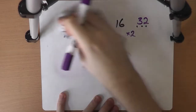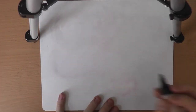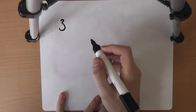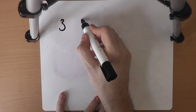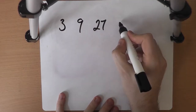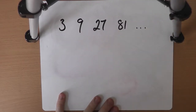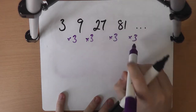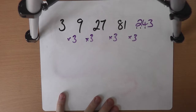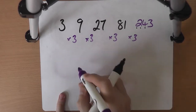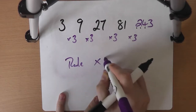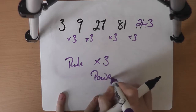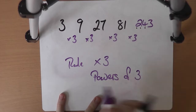We can even have sequences defined by rules that aren't operation-based — not add, take, times, or divide. We could have something like 3, 9, 27, 81. We could say that each time the numbers in this sequence are being multiplied by 3 — absolutely, perfectly fine. The next number will be 81 times 3, which is 243. But the rule is also the powers of 3: 3 to the power of 1, 3 squared, 3 cubed, 3 to the power of 4, and then 3 to the power of 5.